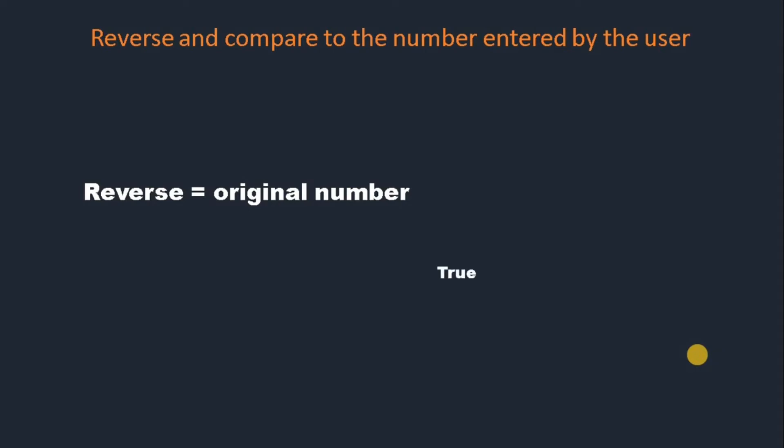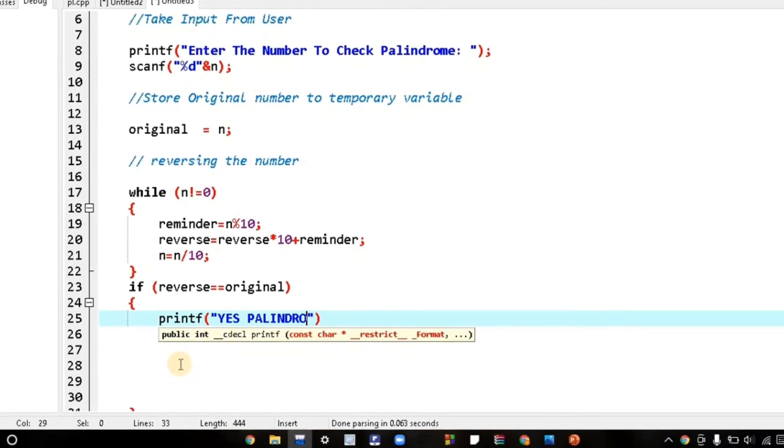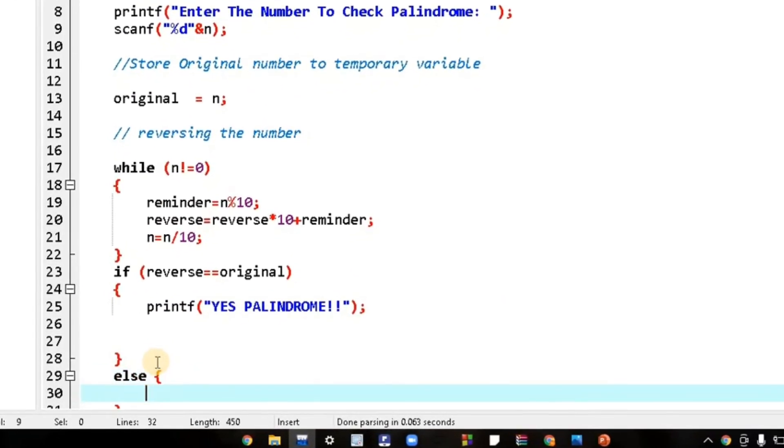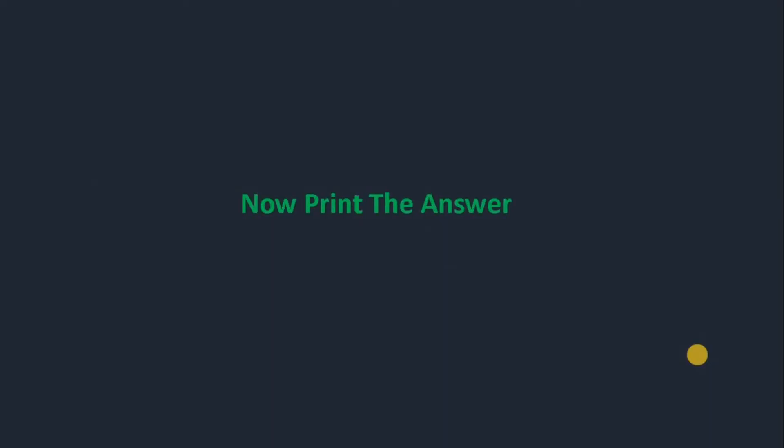We will check with the reversed number. If the condition is true, then it's a palindrome. If the condition is false, then it's not a palindrome. We write an if statement: if true, print palindrome; if not, print not a palindrome.